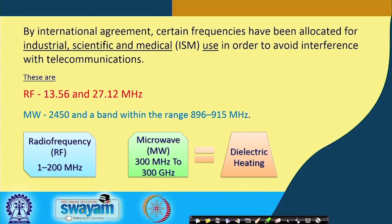Under international agreement, only certain frequencies are allowed for industrial, scientific, and medical use. This is to avoid interference with the federal telecommunication system, because the same sort of radiations are also used in telecommunication. For dielectric heating, which may be of two forms — radio frequency heating or microwave heating.